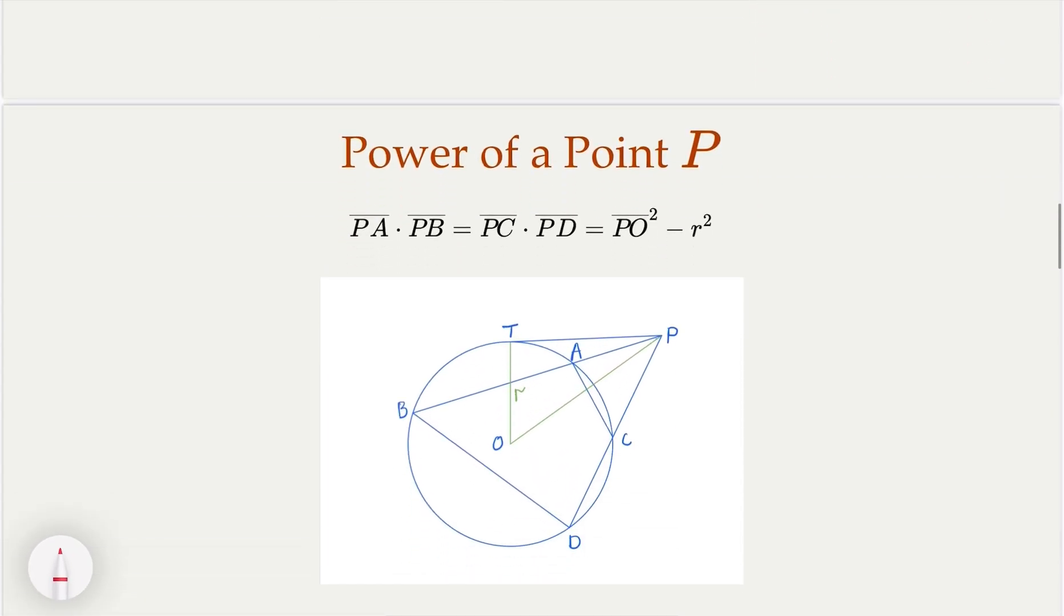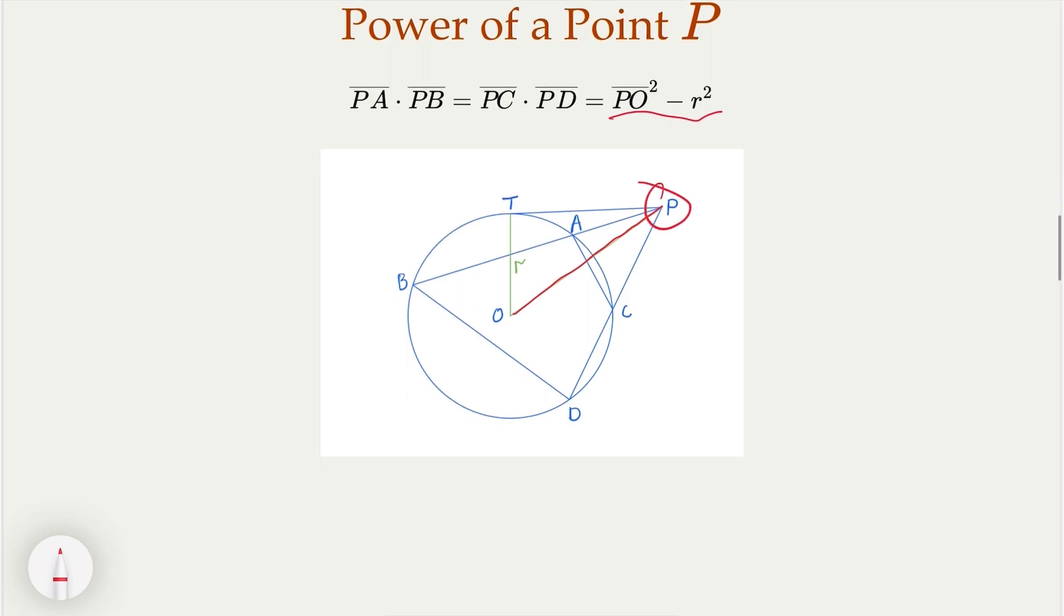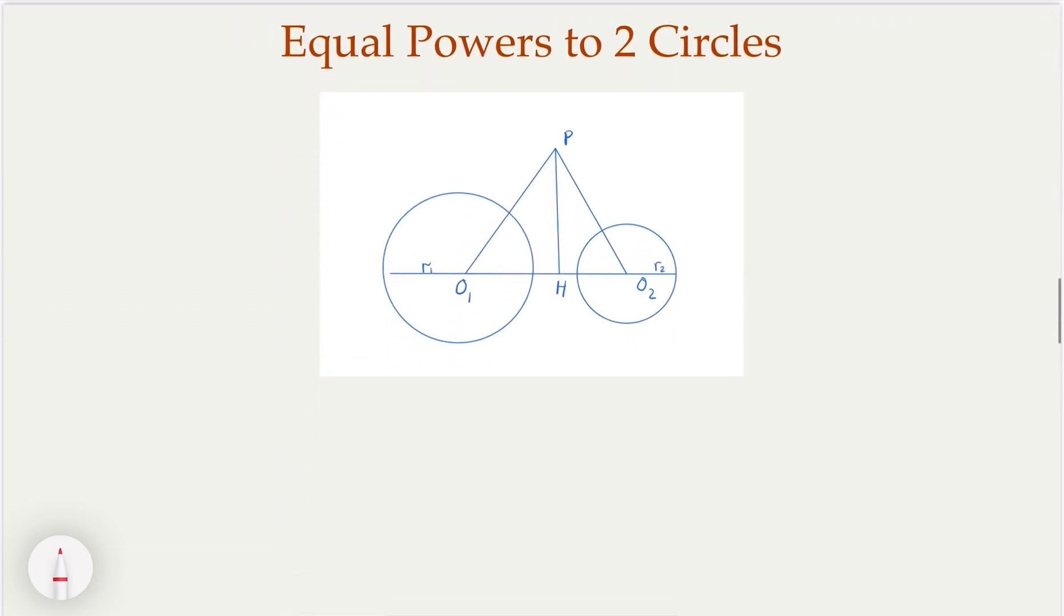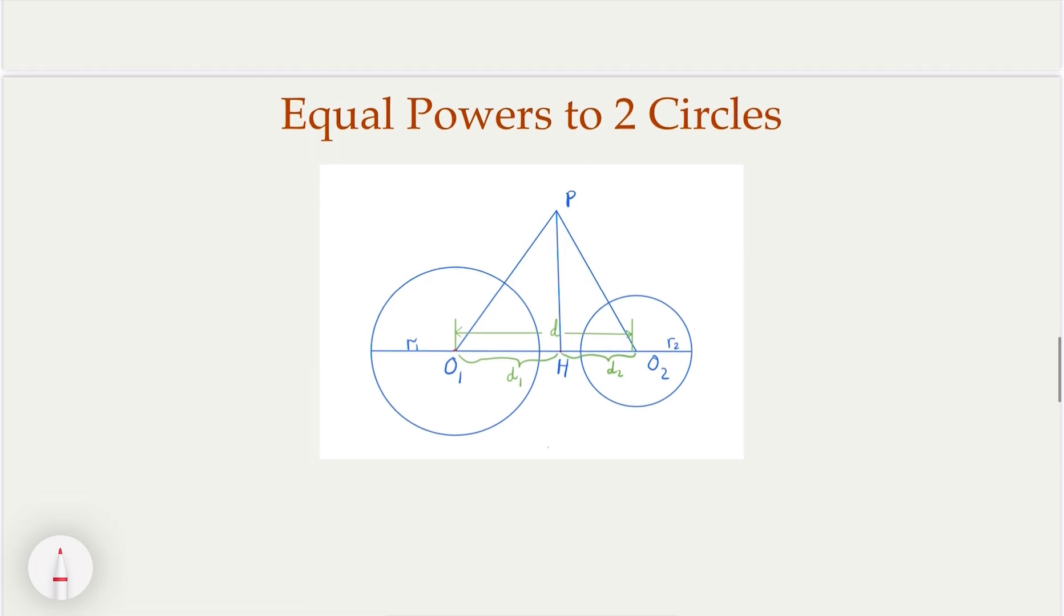So another property, now that we know this quantity here only matters where the P is located and how big is the circle. Another theorem we have is that if I have two circles, and then I have a P with equal powers, and then we claim that this must be on a line that's perpendicular, but with a fixed position. This position has to be fixed. So how do we show that?